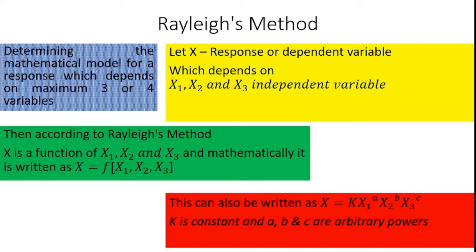According to Rayleigh's method, X can be expressed as a function of X1, X2, and X3. Mathematically, it can be written as capital X equals F of X1, X2, X3.